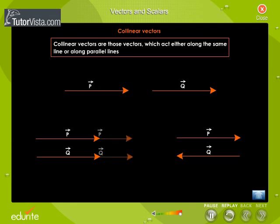If two collinear vectors act in the same direction, then the angle between them is zero degrees and such vectors are called parallel vectors. If two collinear vectors act in opposite directions, then the angle between them is 180 degrees or pi radians. Such vectors are called antiparallel vectors.